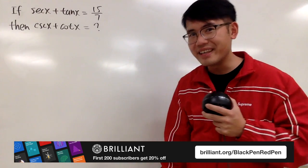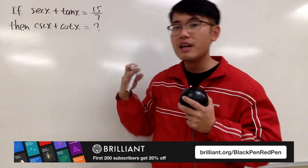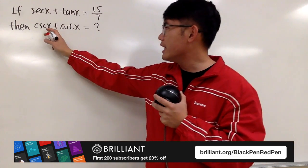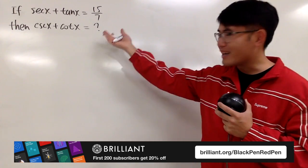Okay, let's do some math for fun. Here we're going to find out if secant x plus tangent x is equal to 15 over 7, then what's the value for cosecant x plus cotangent x? Of course, please pause the video and try this first.